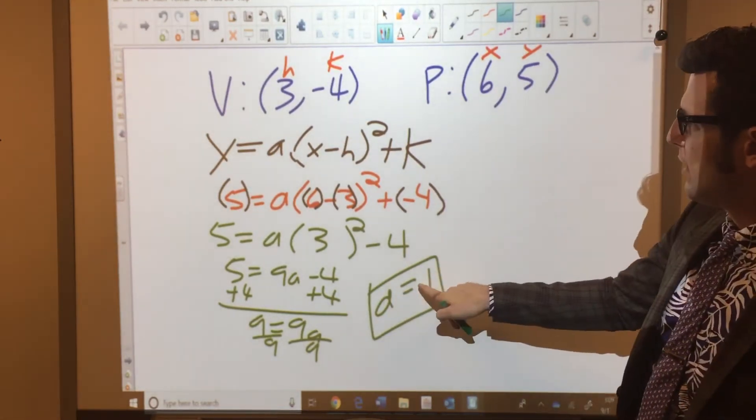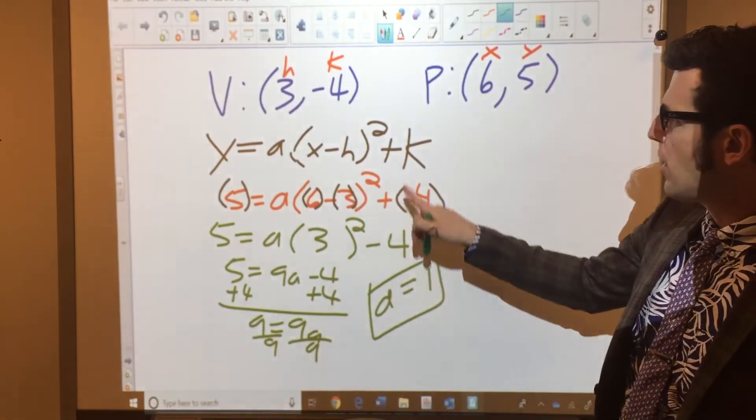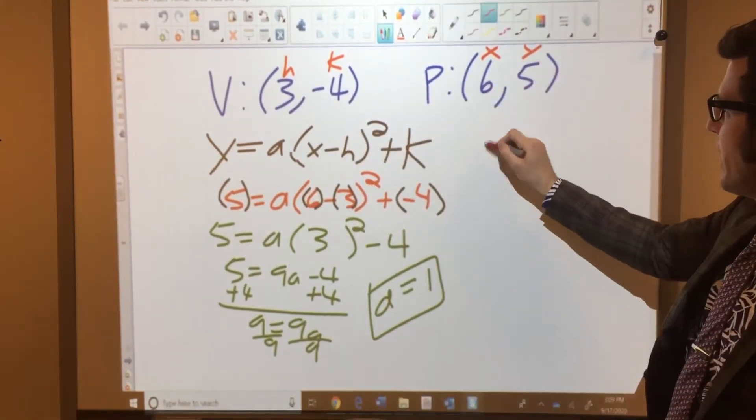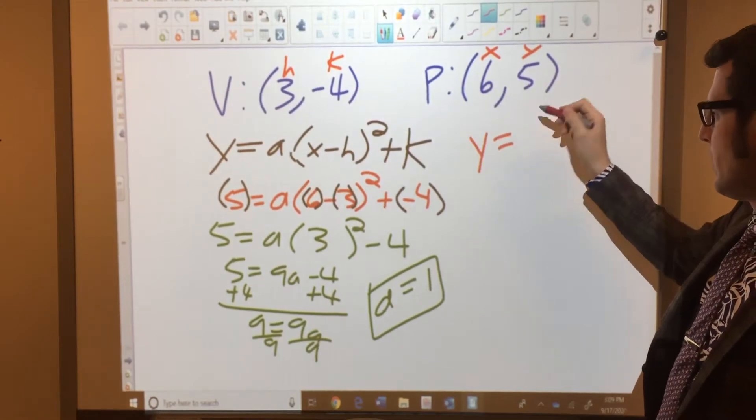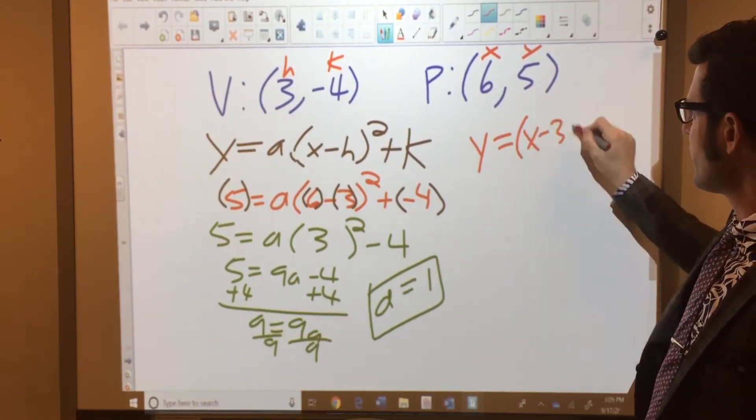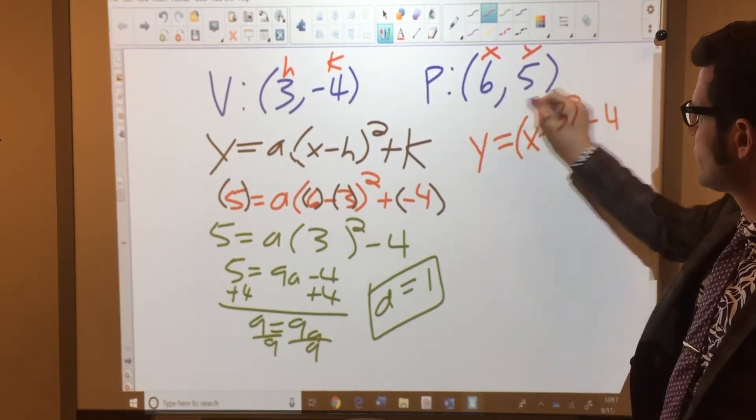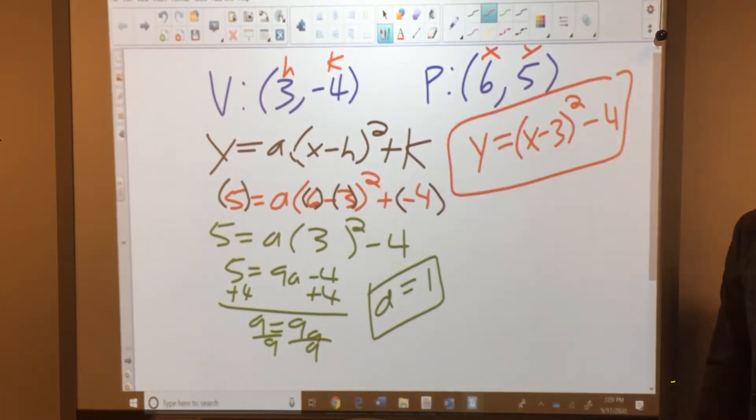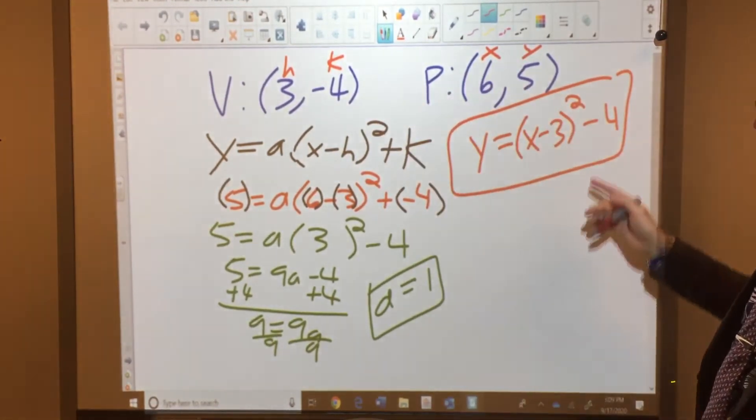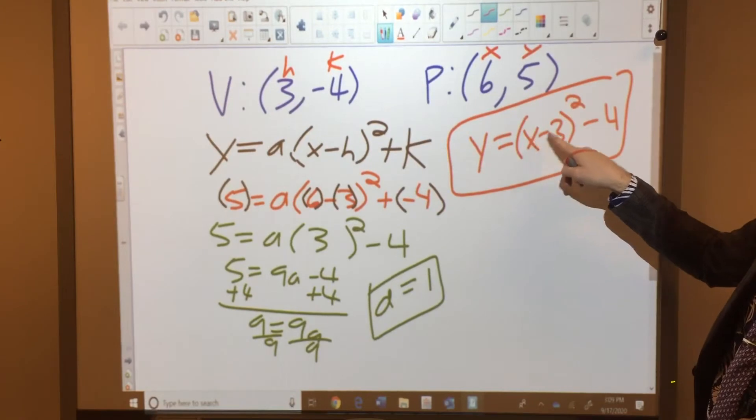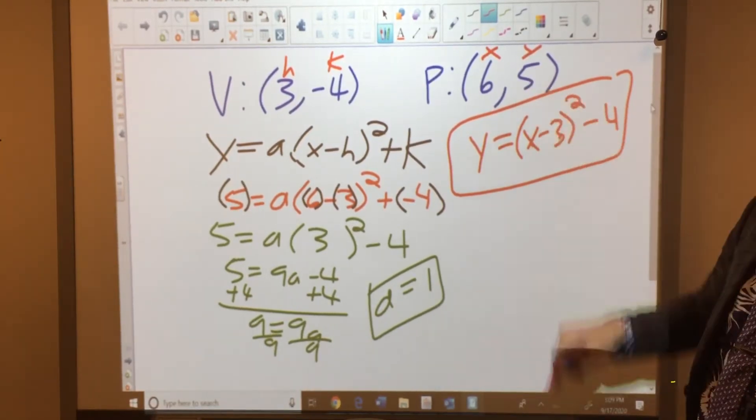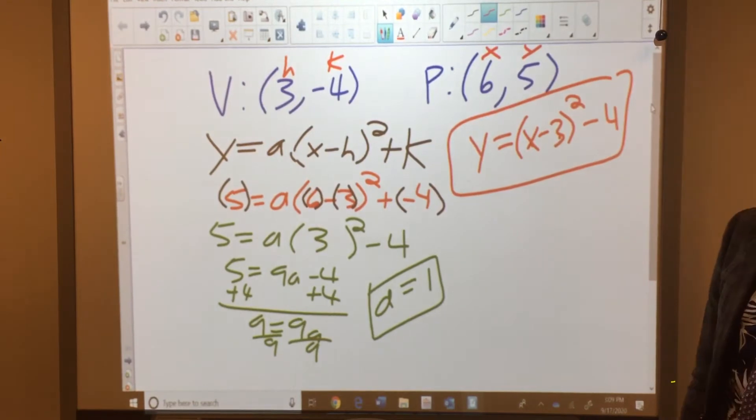So if a equals 1, we know h and k. Hey, we can rewrite this equation using all this information. Y equals, well, it's just 1. So we don't have to write that. It's redundant. x minus 3 squared minus 4. This would be the vertex form for this given information. This generates this coordinate. And you can check it. You could plug in 6 here. If you take 6 minus 3, that's 3 squared is 9 minus 4. It gives you 5. So that did give you that point back.